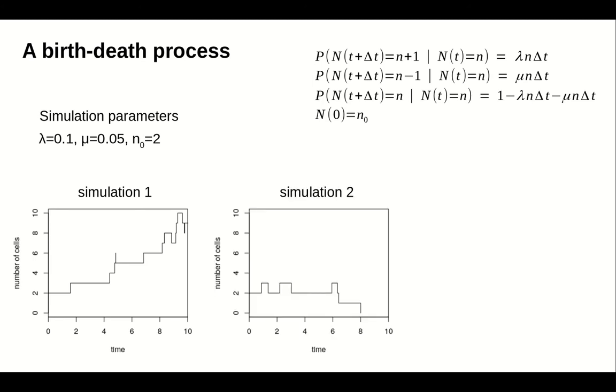When we repeat the simulation, however, we get quite a different result. We get a birth, followed by a death, then another birth, followed by a death, and then a third birth, followed by a death. However, then an unfortunate sequence of events occurs. We get two deaths in succession without any births, even though the birth rate is higher than the death rate. The population size drops from 2 to 1 to 0. At that point, the population went extinct, so remains at 0 permanently.